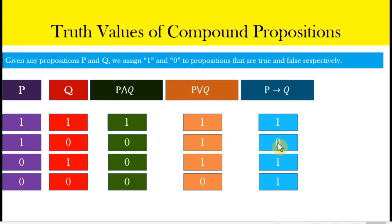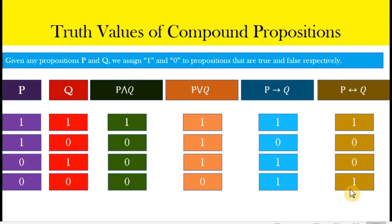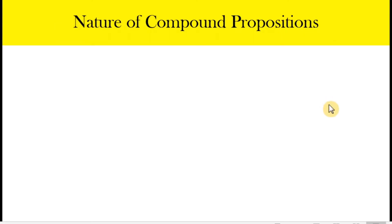Here are the truth values of an implication. An implication is only false — we see it has only zero in the second row — and that happens if the hypothesis is true and the conclusion is false. In any other instance it is always true. For a biconditional, it is true if the two simple propositions have the same truth values, meaning both are true or both are false. Otherwise, if they have different truth values, the biconditional is false.